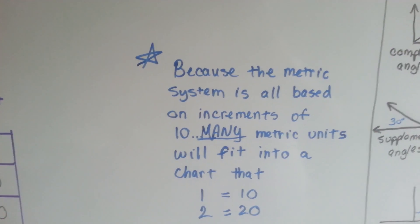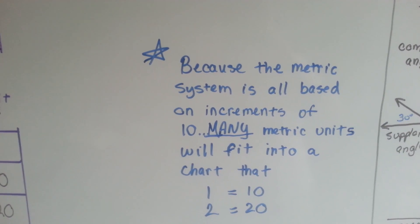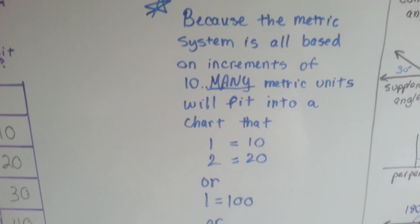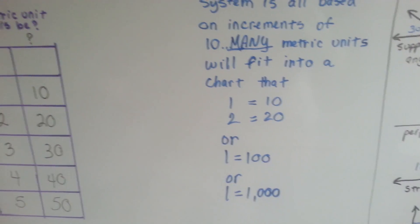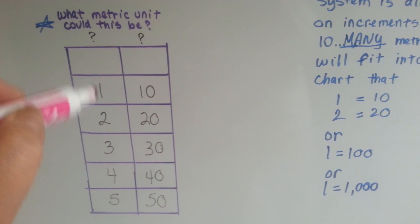Because the metric system is based all on increments of 10, many metric units can fit into that chart. One is equal to 10. Two is equal to 20. Or one is equal to 100. Or one is equal to 1,000. Because the metric system is based off of groups of 10.